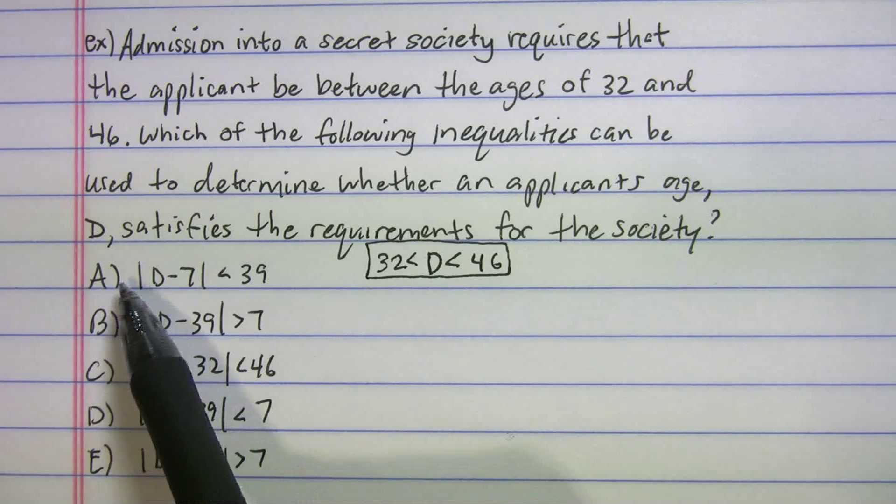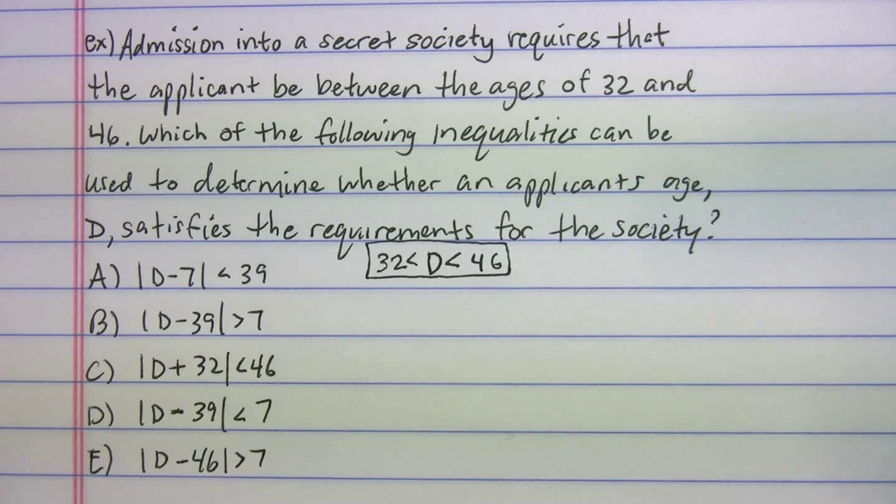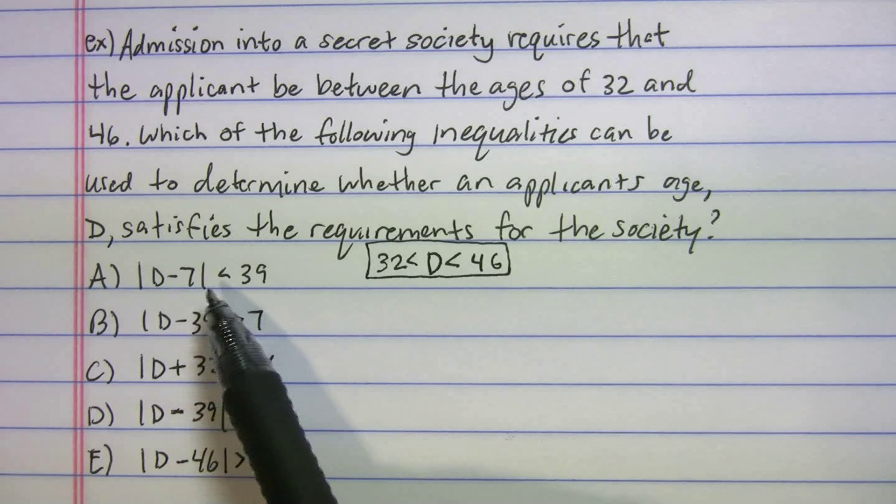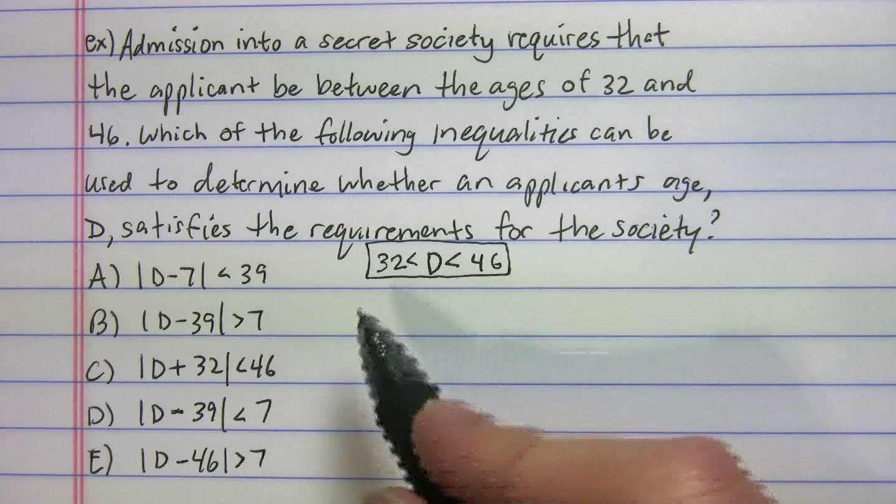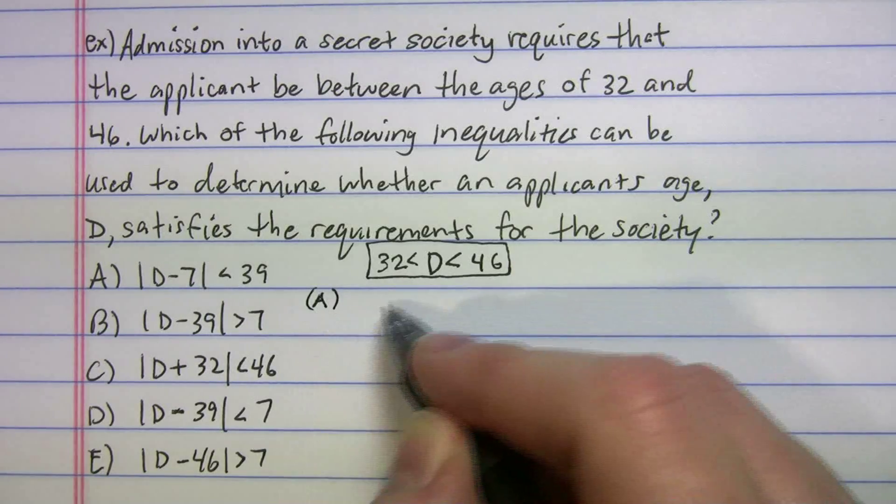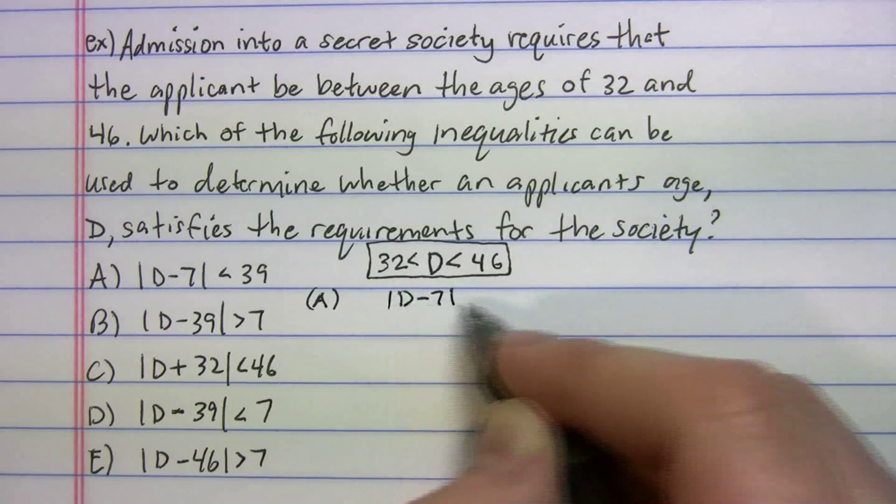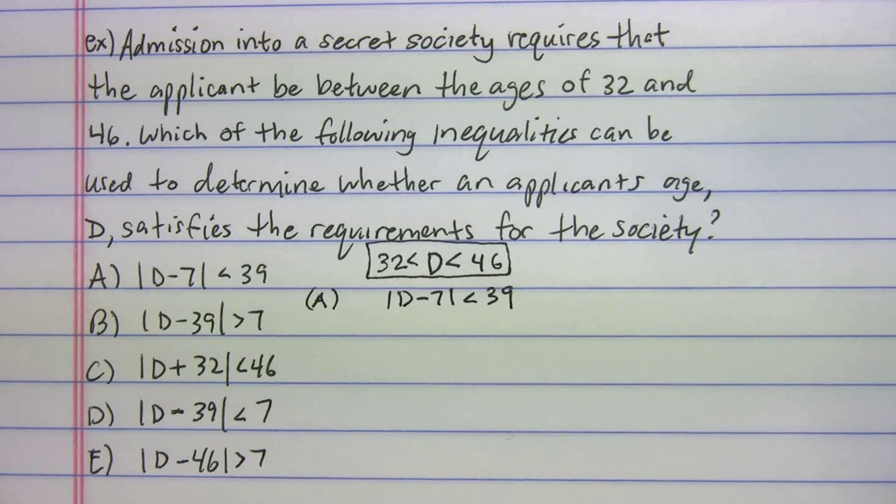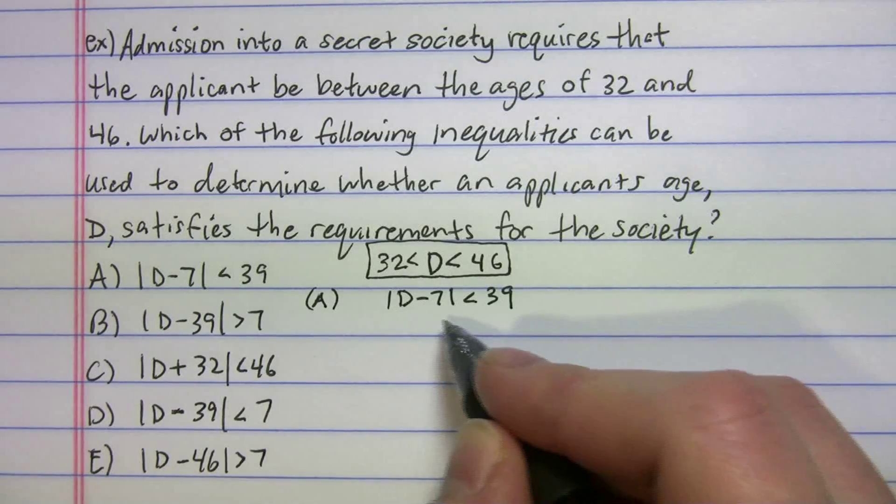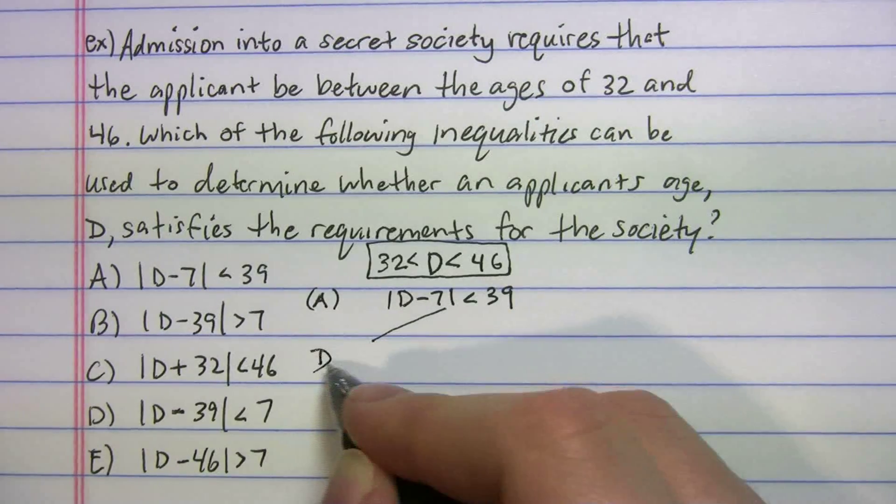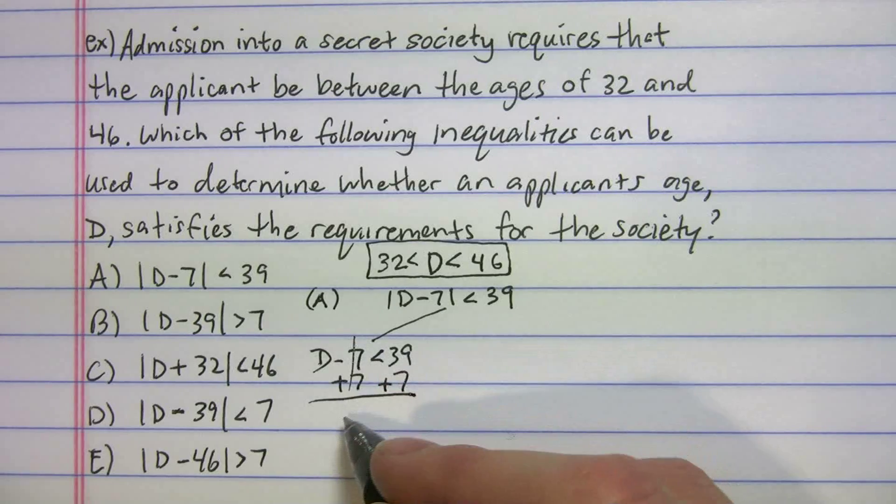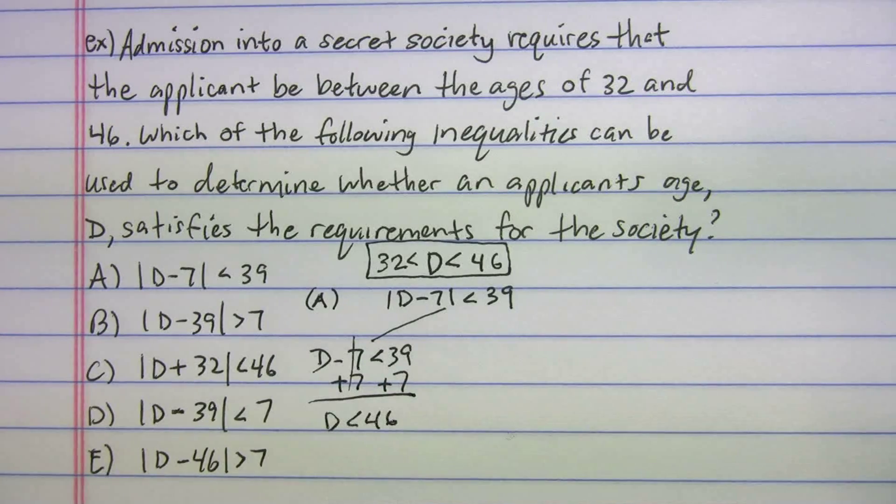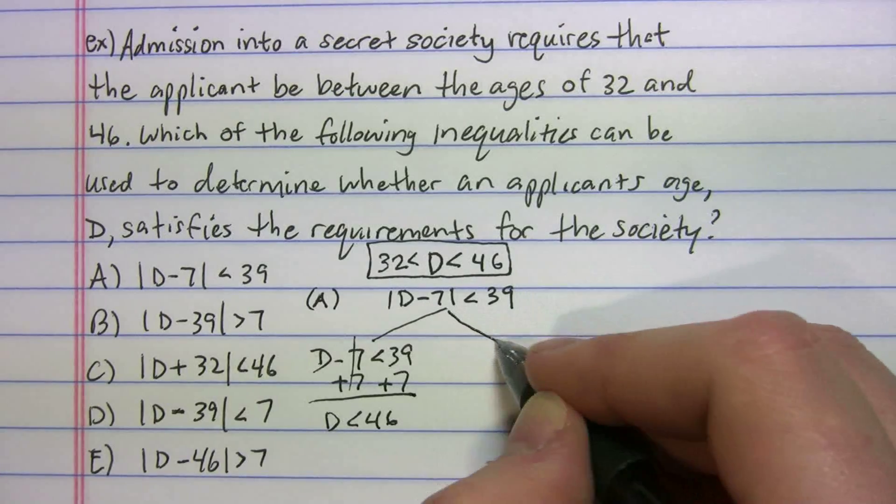Now you may be saying to yourself, it's going to take a long time to test all these choices, but it's really not that bad. Just like before when you do the positive and negative versions of the number, you're going to do that for here. Let's say we want to test A, that's D minus 7 is less than 39. So let's do the positive one. D minus 7 less than 39, we add the 7, and so far it looks good. We've got D is less than 46.